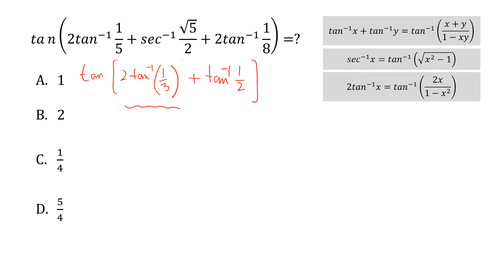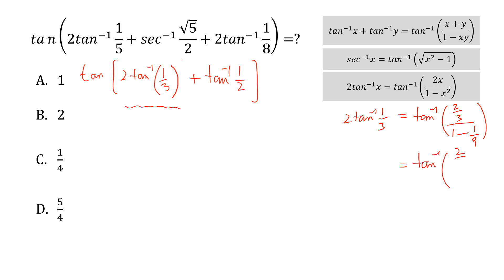We use the double-angle formula: 2 times tan⁻¹(1/3) equals tan⁻¹ of (2/3) divided by (1 minus 1/9). That gives tan⁻¹ of (2/3) divided by (8/9), which simplifies to tan⁻¹(3/4).